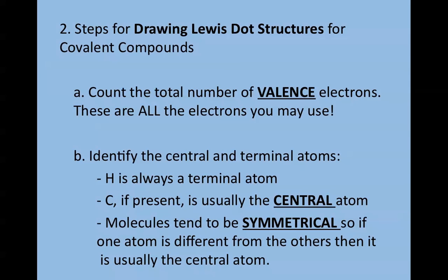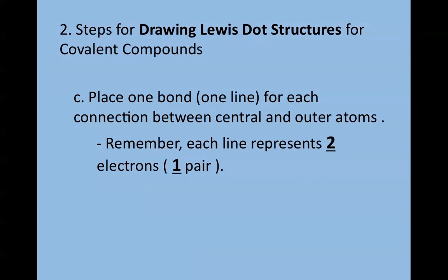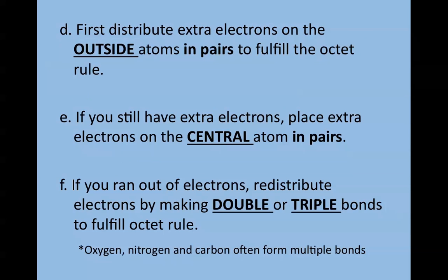Then identify the central atom and terminal atoms. Hydrogen is always a terminal atom. Carbon, if present, will usually be the central atom. Molecules tend to be symmetrical, so if one atom is different from the others, it's usually that central atom. Once you do that, place one bond for each connection between the central and outer atoms. Do not connect the outer atoms to each other. Remember, each line represents one pair of electrons or two electrons.